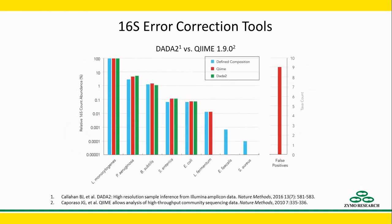Using the defined composition of the Zymobiomics Microbial Community Standard 2, QIIME made nine false positive predictions, while the error correction of DADA2 called no false positives.